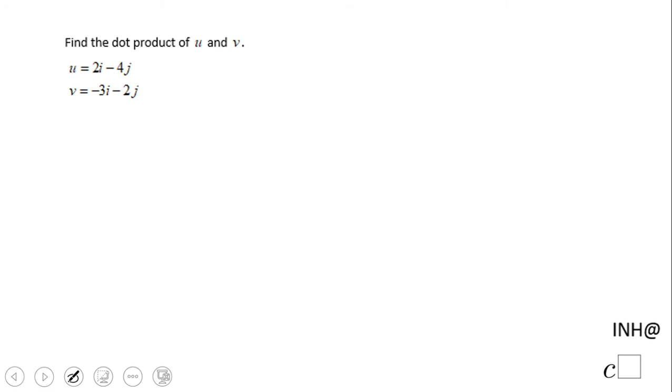Welcome and welcome back. In this example, we're going to find the dot product of two vectors u and v. These vectors are given as a linear combination using the unit vectors for the x-axis and y-axis.